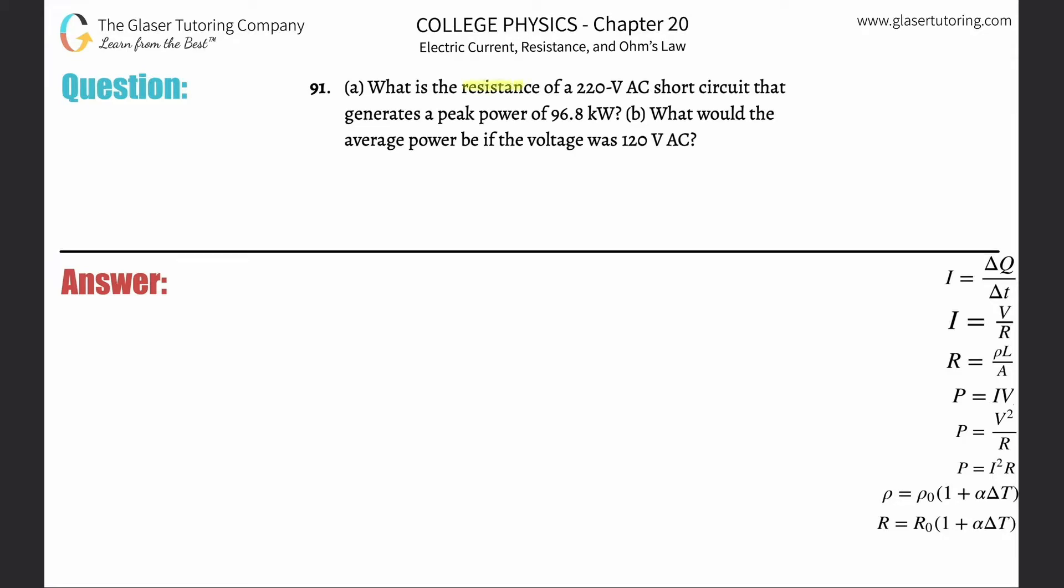Number 91, letter A: What is the resistance of a 220-volt alternating current short circuit that generates a peak power of 96.8 kilowatts? Anytime they give you a voltage and start talking about peak power instead of just power, we have to take special precautions when doing the problem.